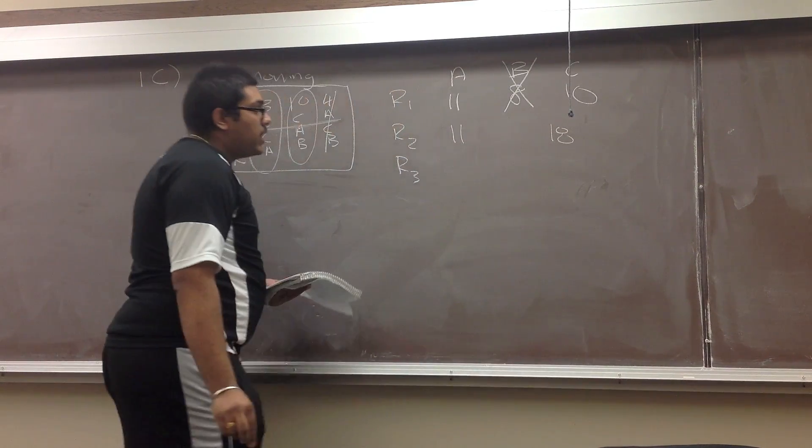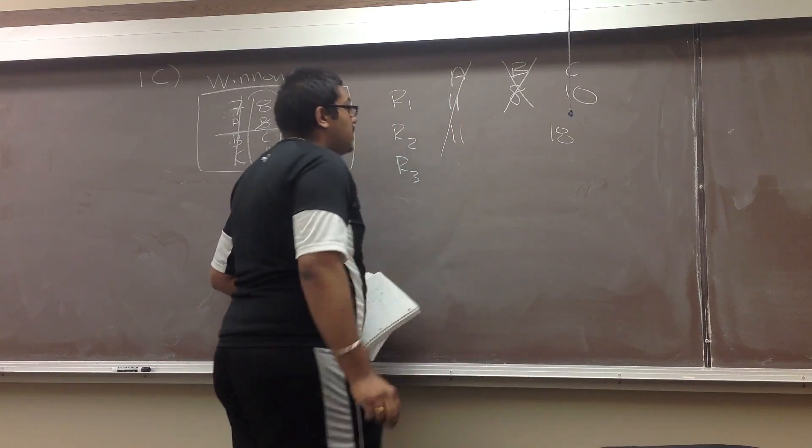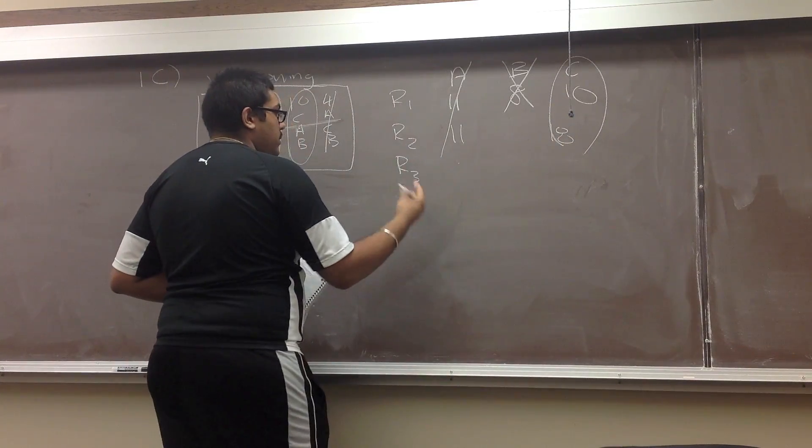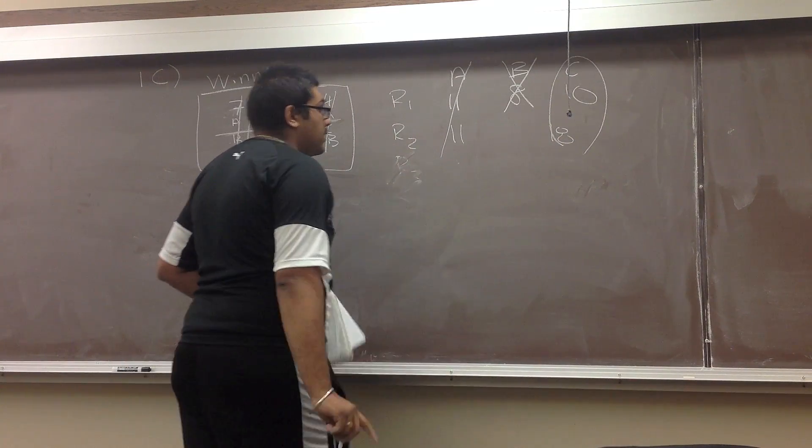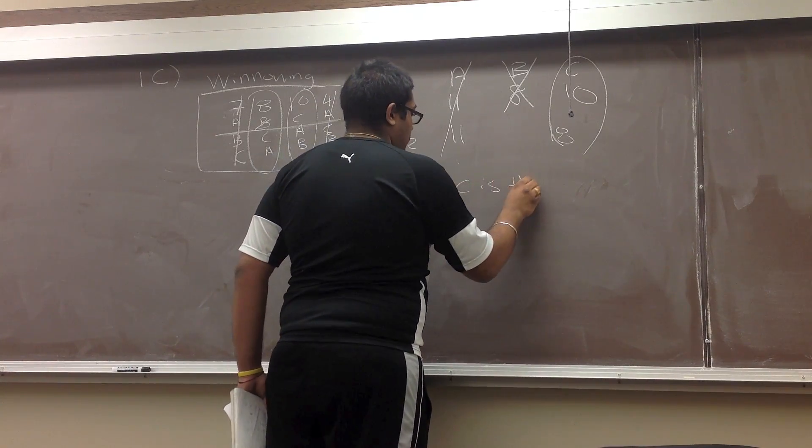And because of winnowing, we have to go eighteen is over eleven. So eleven is the least. A is removed, so C is the winner. So we could finish this in actually two rounds, not three. So C is the winner.